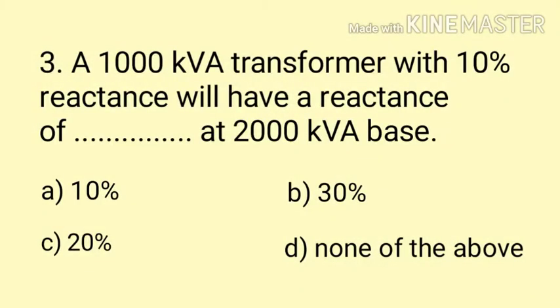Question number 3. A 1000 KVA transformer with 10% reactance will have a reactance of dash at 2000 KVA base. Isme given hai transformer ki rating, transformer ka reactance, aur base KVA bhi given hai 2000 KVA. Puchha hai ki transformer ka reactance kitna hoga 2000 KVA base par. Formula hai: percentage reactance at base KVA = (base KVA / rated KVA) × percentage reactance at rated KVA = (2000 / 1000) × 10 = 20%. Here the correct answer is Option C.